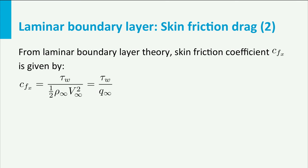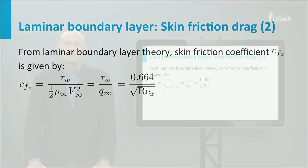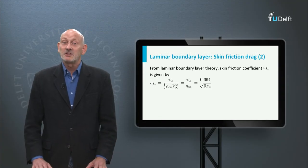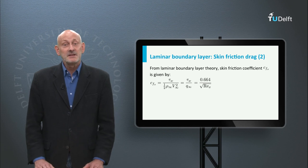From laminar boundary layer theory, we can find that the local skin friction coefficient, defined as the shear stress over the undisturbed dynamic pressure, is equal to 0.664 divided by the square root of the local Reynolds number. So the skin friction coefficient decreases with increasing distance from the leading edge.